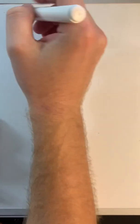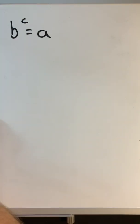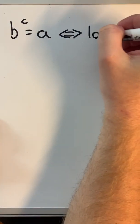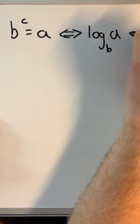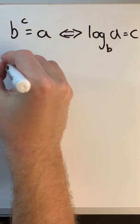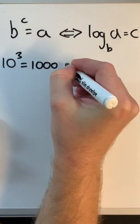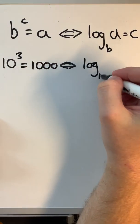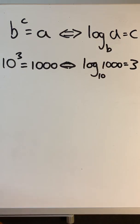The relationship we get is: if we have b to the power c equals a, then this is the same as log to the base b of a equals c. For example, 10 to the power 3 equals a thousand, and that's the same as writing log to the base 10 of a thousand equals 3.